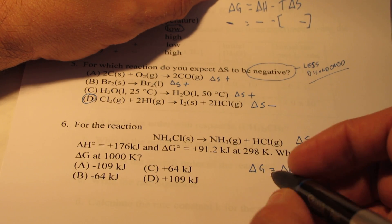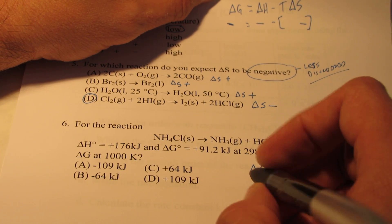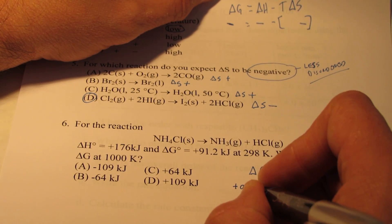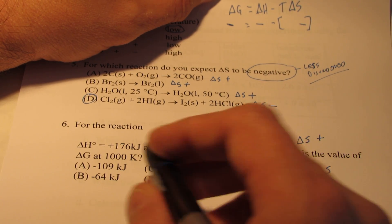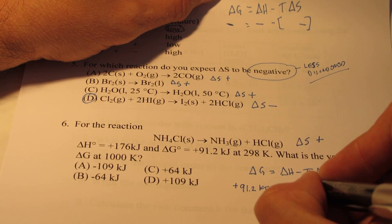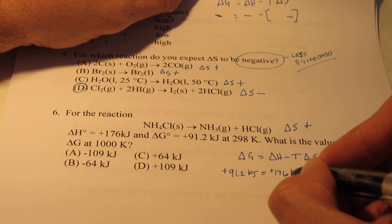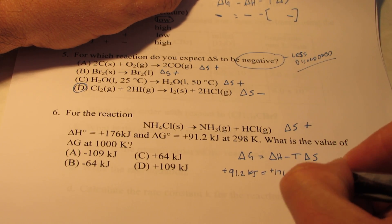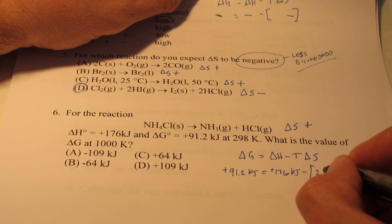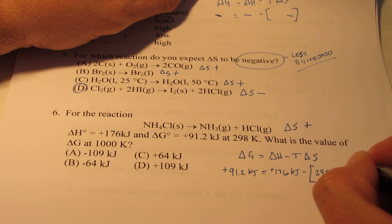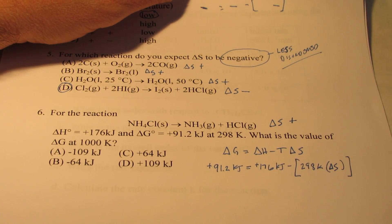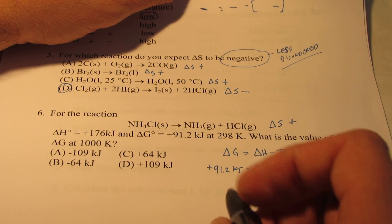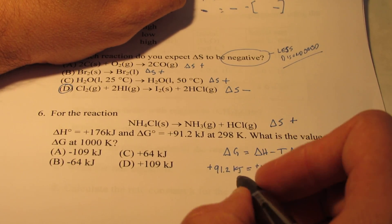So let's figure it out here. We know that at 298, the Delta G is positive 91.2 kilojoules. The Delta H is positive 176 kilojoules. My temperature is 298 Kelvin. And my change in entropy, well we're going to have to solve for that. So how are we going to solve for change in entropy? Well let's do it one step at a time.